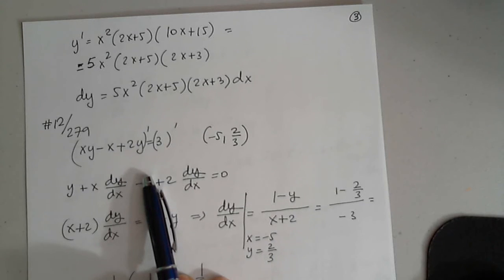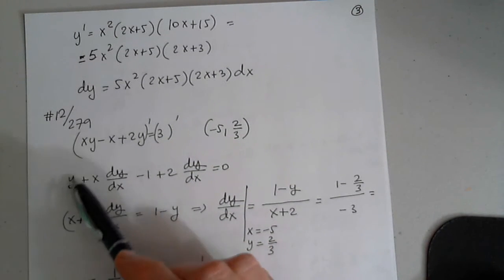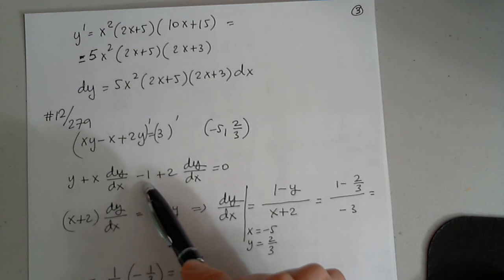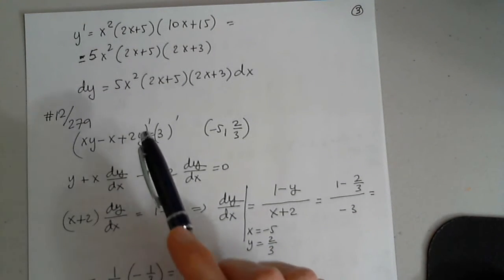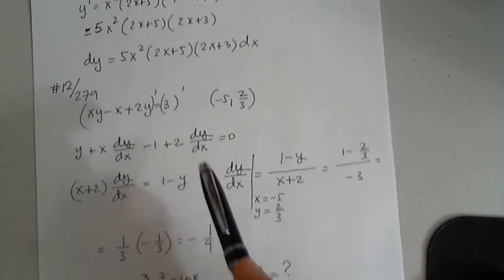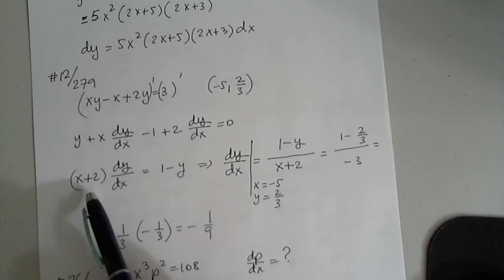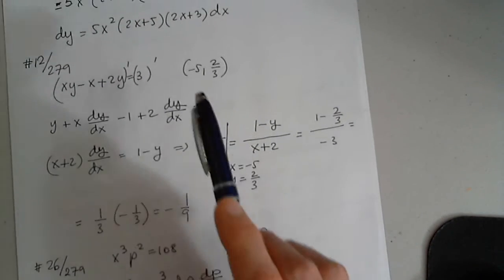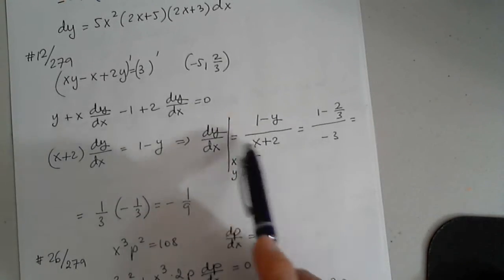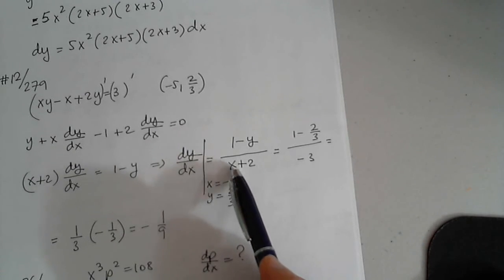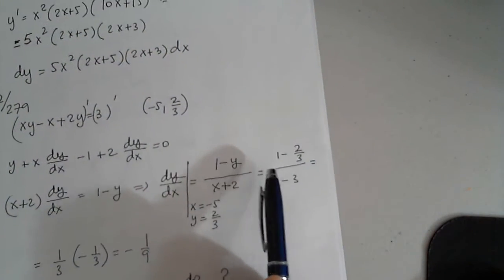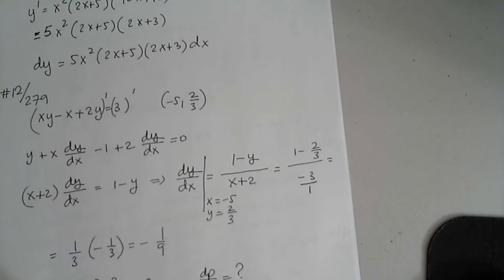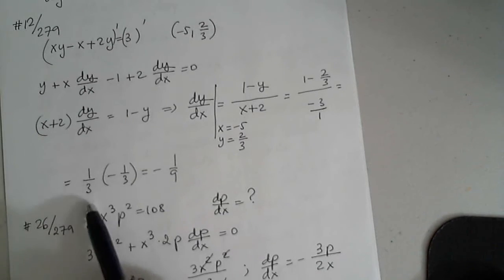Here we were asked to use implicit differentiation and differentiate. This is the product rule. x prime is 1 times y plus x times y prime, which is dy over dx. x is the variable, so minus 1, plus 2 times y, but this is 2 times the function, so it's 2 times the function prime, and 3 prime is 0. I factored out dy over dx from x plus 2. I moved 1 to the other side, I moved y to the other side. So then dy is this over this. And now we're asked to evaluate it when x is negative 5 and when y is 2 thirds. We just plugged it in. 1 minus 2 thirds over negative 5 plus 2, which is negative 3. Find the least common denominator at the top, or just say 1 minus 2 thirds is 1 third. This is negative 3 over 1. Negative 3 over 1 gets flipped into negative 1 over 3, so the answer would be negative 1 over 9.